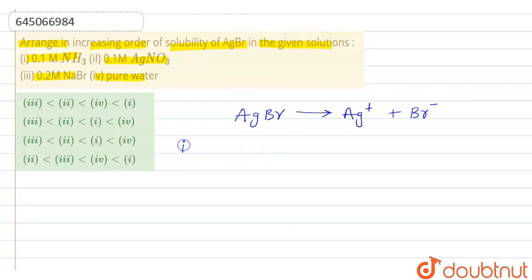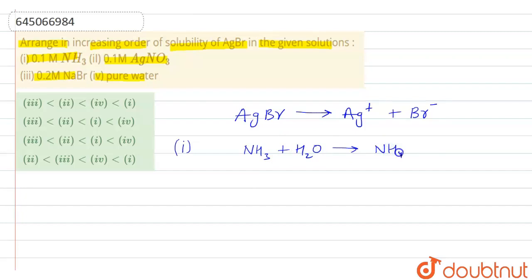In the first option we have NH₃. When dissolved in water it will give NH₄⁺ ions along with OH⁻ ions. As given in the question, the concentration of ammonia is 0.1, so the concentration of NH₄⁺ ions will be 0.1 and OH⁻ will also be 0.1.